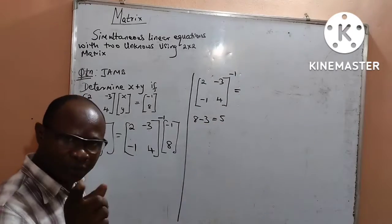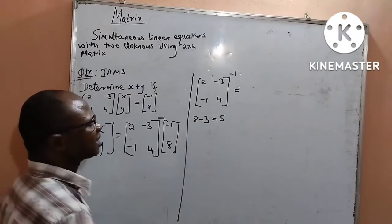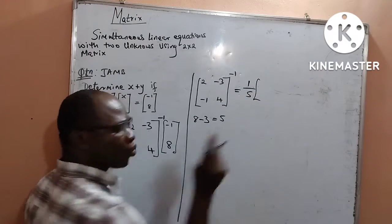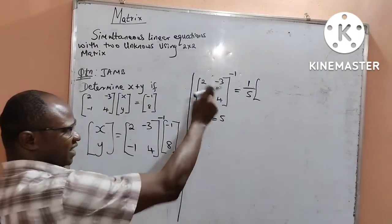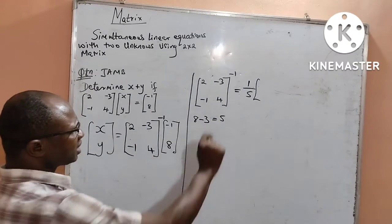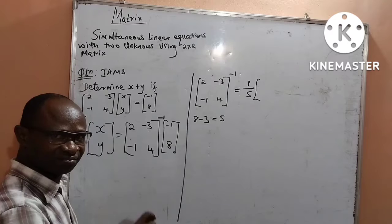I will use the reciprocal of the determinant, which is now going to be 1 over 5. What we are looking for is the inverse of this matrix. That is how we can get it.